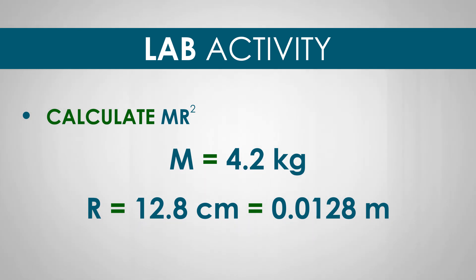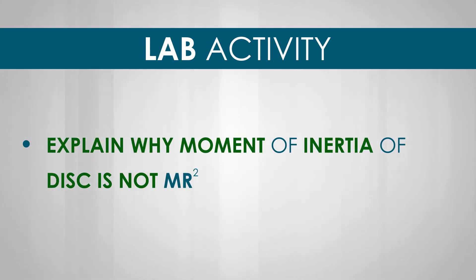1. Given the mass of the disk was 4.2 kilograms and its radius was 12.8 centimeters, calculate MR squared. 2. Does your answer match with our experimentally determined value of the moment of inertia for the disk? Explain why they shouldn't. In other words, why the moment of inertia of the disk should not be MR squared. Make sure you read the instructions on how to report your answers to the instructor.